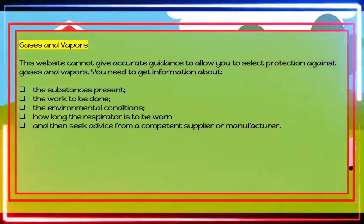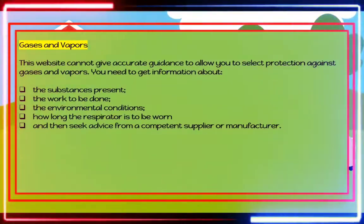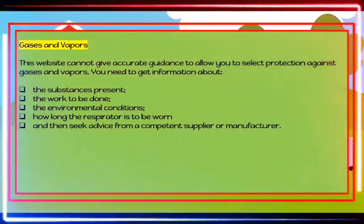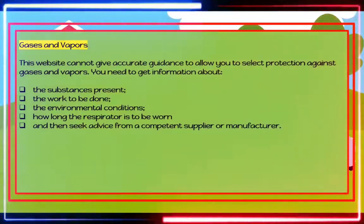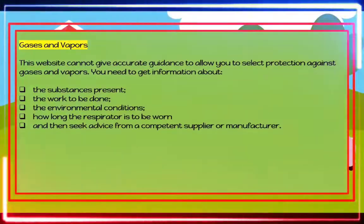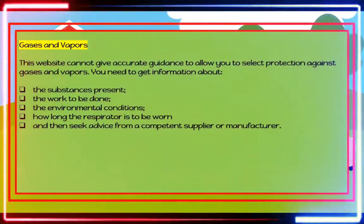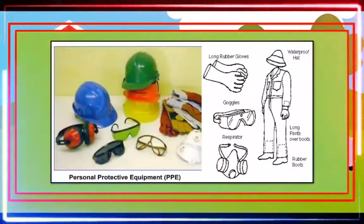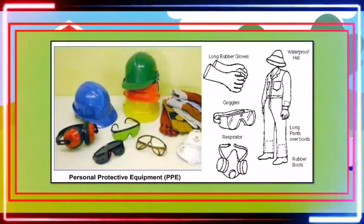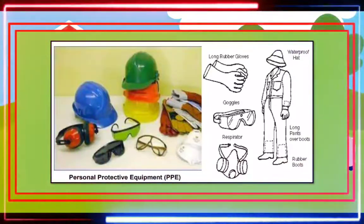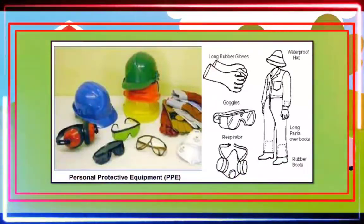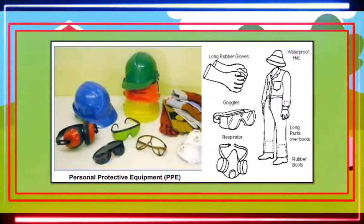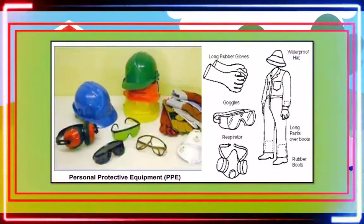Gases and vapors: Selecting protection against gases and vapors requires specific information about the substances present, the work to be done, the environmental conditions, and how long the respirator is to be worn. Seek advice from a competent supplier or manufacturer, as different absorbents are used for different gases, and it is difficult to know when filters need changing once the absorbent is saturated. Respirators relying on filtration should never be used in oxygen-deficient atmospheres.